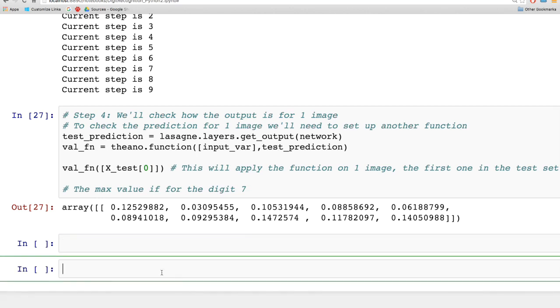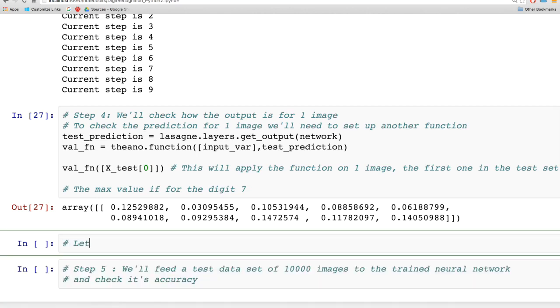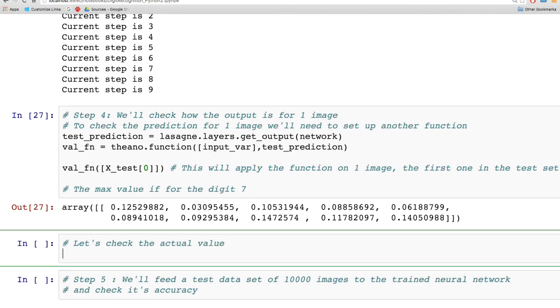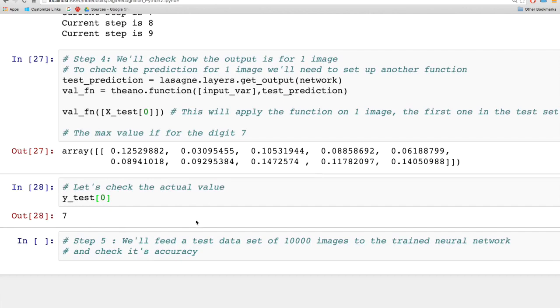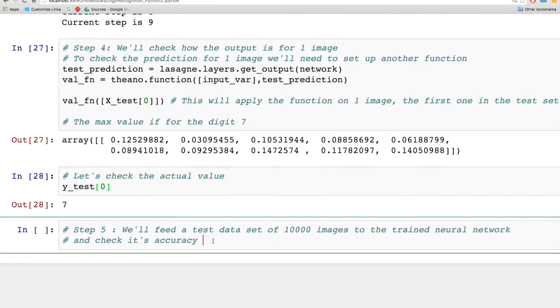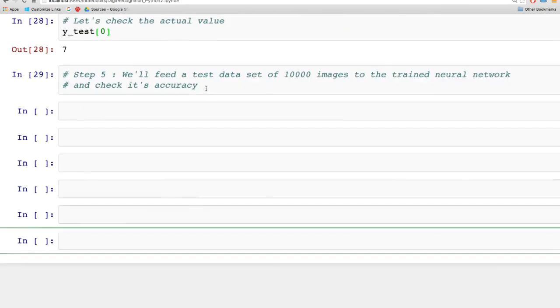Let's check the actual value of the digit. We'll look at y_test, which is the array of labels for x_test. The corresponding value is 7, so this image was classified correctly.